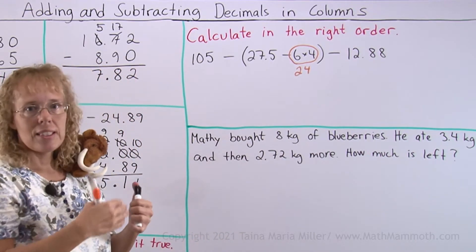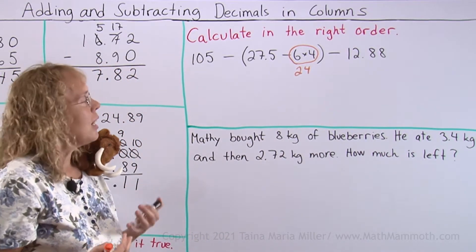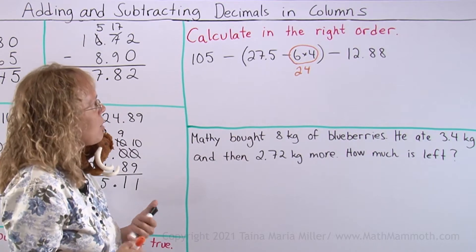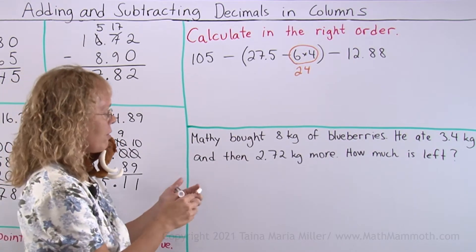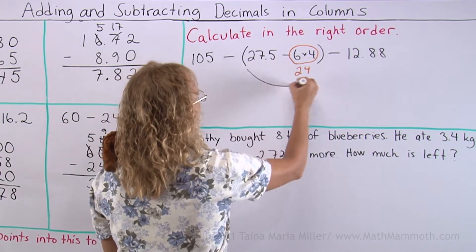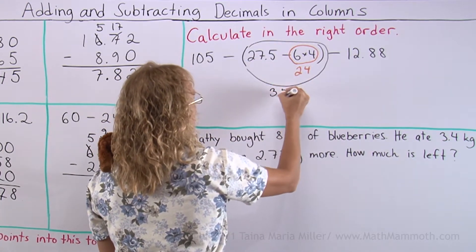Now inside parenthesis is 27.5 minus 24. I can do that mentally. 27 minus 24 is 3, and then you have the 0.5. So this whole thing will be 3.5.